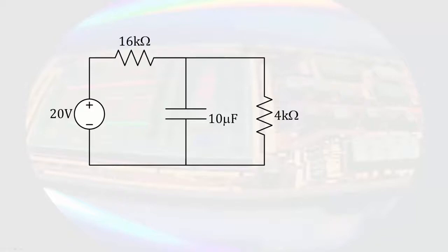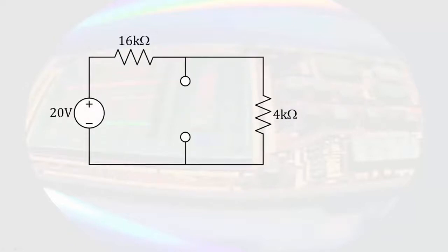If we assume that the circuit has been connected for a long time, like a couple tenths of a second, then we can assume that the capacitor is charged and the circuit is in a DC condition. This means that the capacitor acts as an open circuit. Even though the capacitor is an open circuit, it can still store energy.